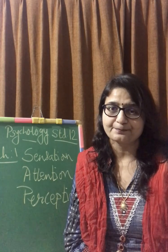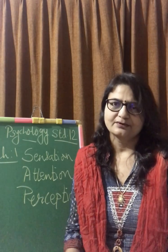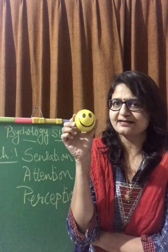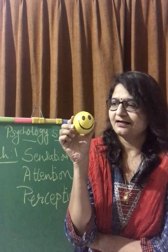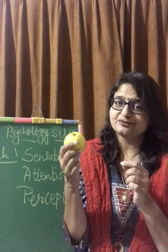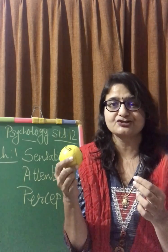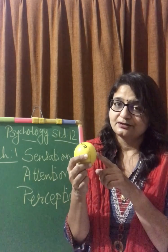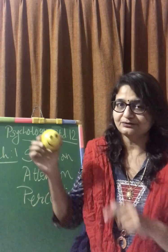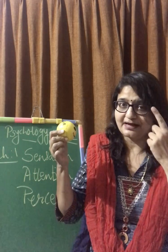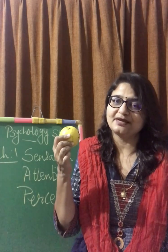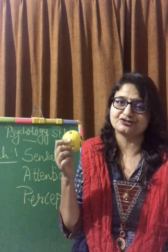How do all three processes take place together? There is a presence of an external object, and this is there to excite my eyes — my visual sensation. I pay attention to it, and after paying attention, perception takes place. Perception is nothing but giving meaning to sensation — it is understanding the object because of my past experiences. I know what this is; this is a ball.